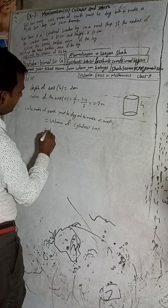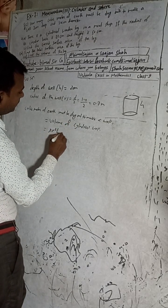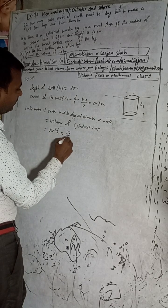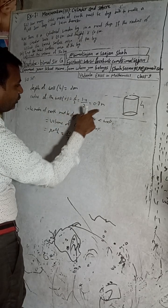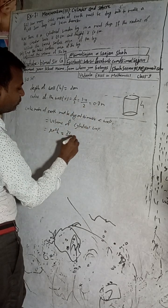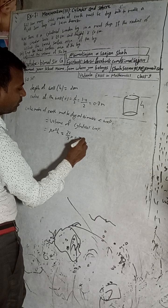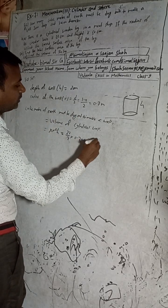π r² into h. Now π value is 22/7 into radius is how much here? 0.7, so 0.7 into 0.7 into height of this, which is 20 meters.